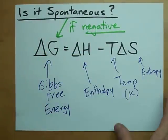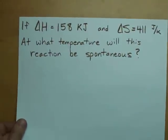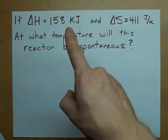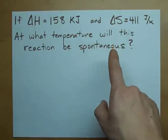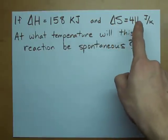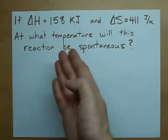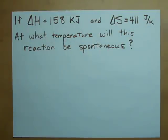Here's a typical question that you would get asked. Here's a reaction. Delta H is 158 kilojoules. Delta S is 411 joules per Kelvin. At what temperature will this reaction be spontaneous? Well, hold on. We have a formula for that.